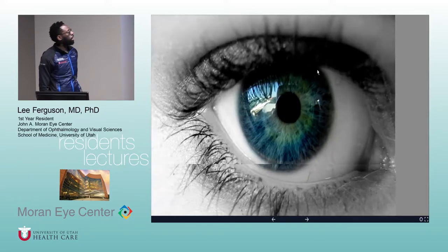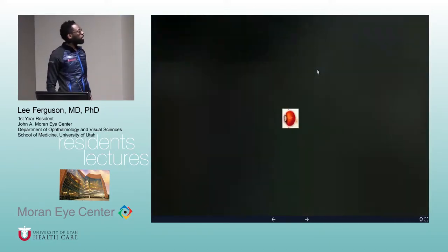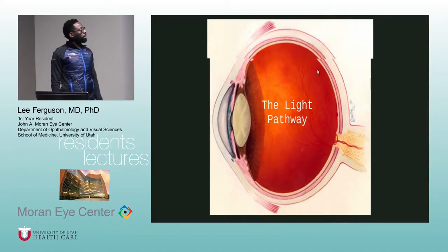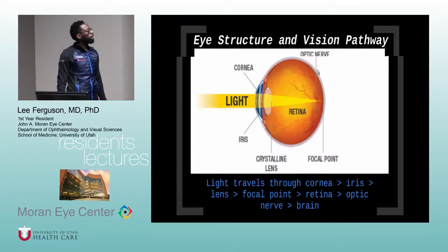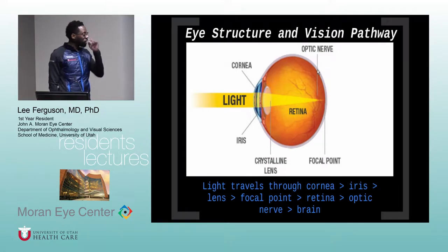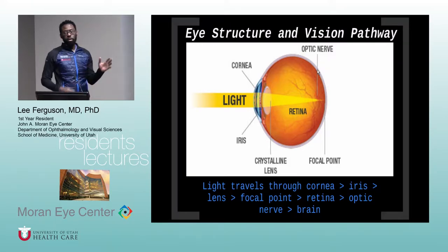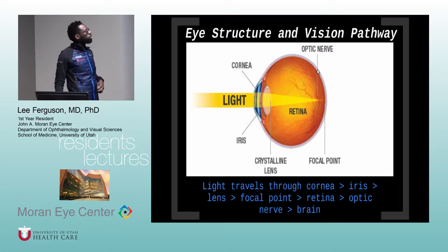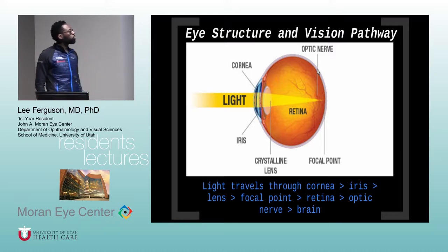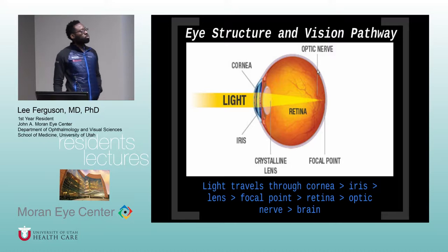We're going to talk about the light pathway today. In talking about the light pathway, we first have to talk about how light travels in the eye. Light comes in and first hits the tear layer, then hits the cornea, goes through the iris, after the iris it goes through the lens, and then it goes to a focal point onto the retina.